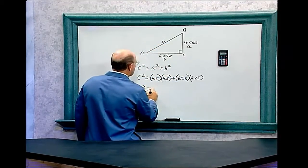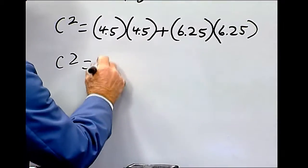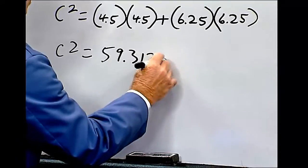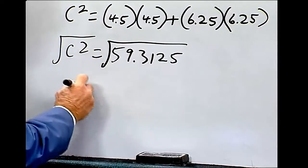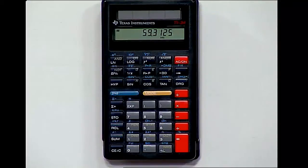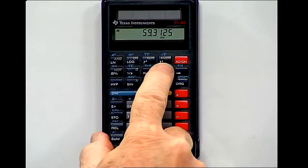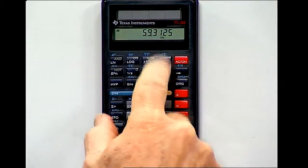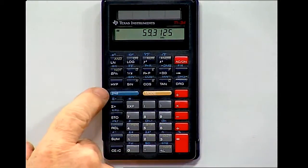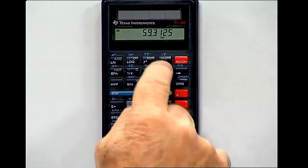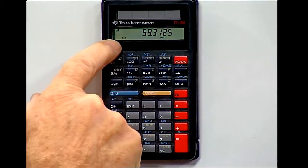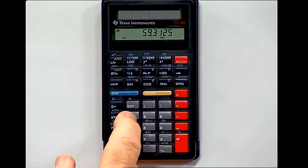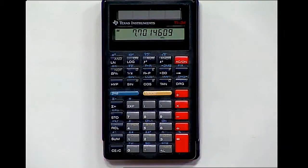So, c-squared equals 59.3125. Now, we have to get the square root of this number, and that will give us c. Now, in this particular calculator, to get the square root, if you notice, it's in blue, and the x is inside the square root, so I have to use a second function. I have to press this button over here to activate the second function. So, hit second, and that is a little indicator on this calculator, showing me that the inverse button is pressed, and all I have to do is press this, and that comes to 7.70146.